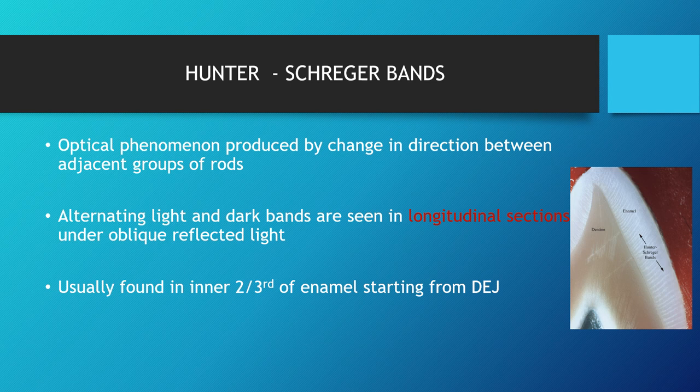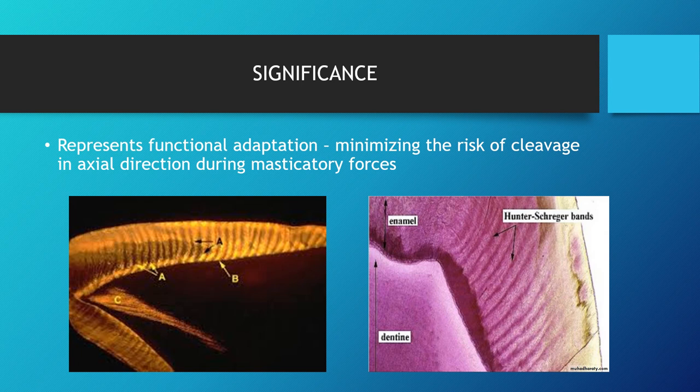Hunter-Schreger bands are an optical phenomenon produced by a change in direction between adjacent groups of enamel rods. These are alternating light and dark bands seen in longitudinal section under oblique reflected light. They are usually found in the inner two-thirds of the enamel, starting from the DEJ. Their significance is that they represent functional adaptation — they minimize the risk of fracture in the axial direction during masticatory forces, acting as stress-bearing areas.